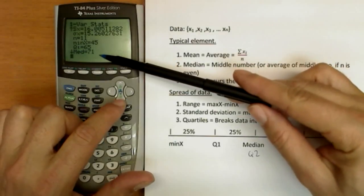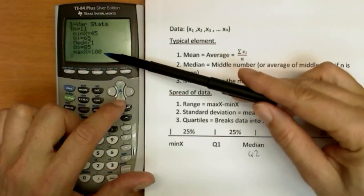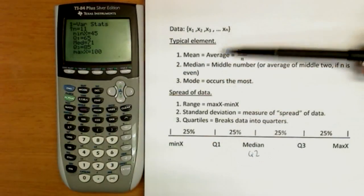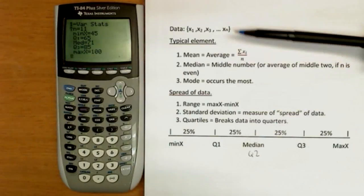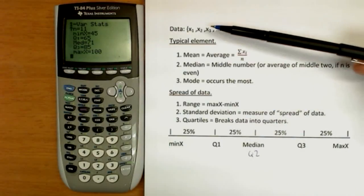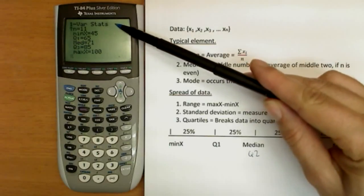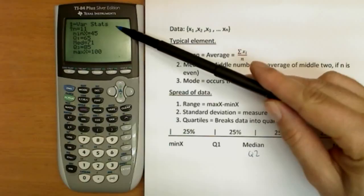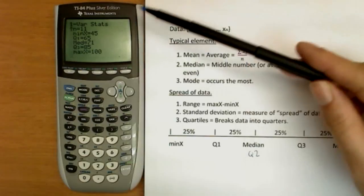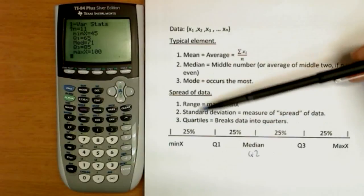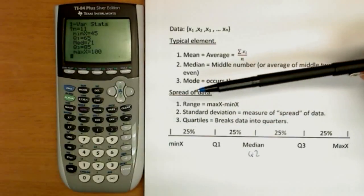Minimum, quartile 1, the median, quartile 3, and the maximum. So as you can see, virtually all of these statistical terms are directly available on our calculator. You just put your data, your x1 through xn, in one of the lists and one variable stats. If you're using L1, you don't have to tell it which lists. The calculator will assume L1. If you're using any other list, you'll have to type that in at the end of one variable stat. And you get all of these important statistical data really in just a few seconds on a calculator.